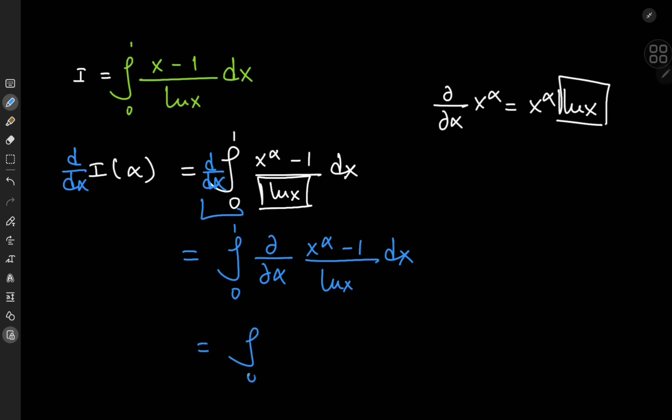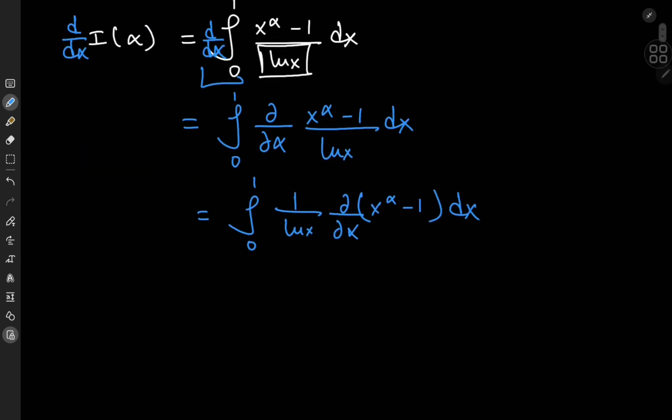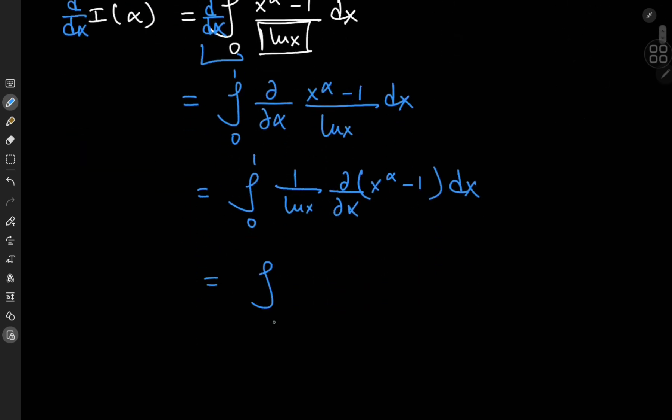So that means we have the integral from 0 to 1 of 1 by log x times the partial derivative with respect to alpha of x to the alpha minus 1 dx.